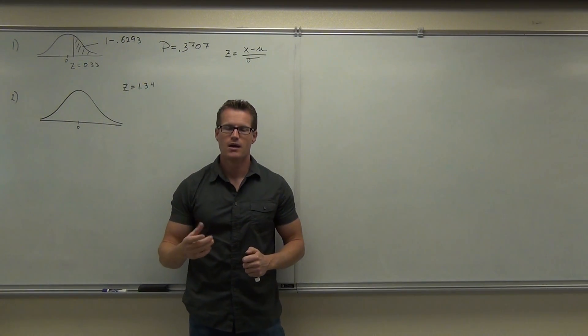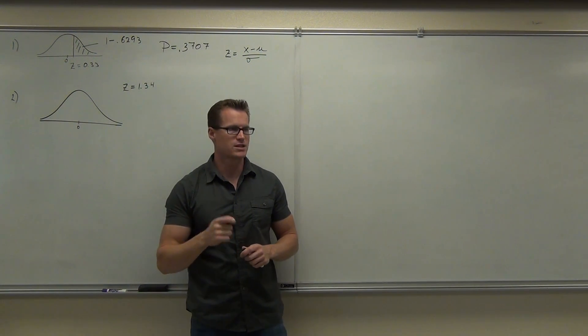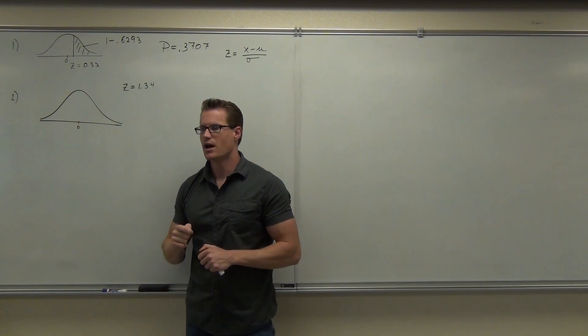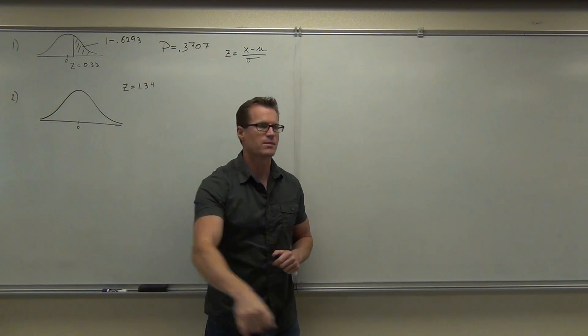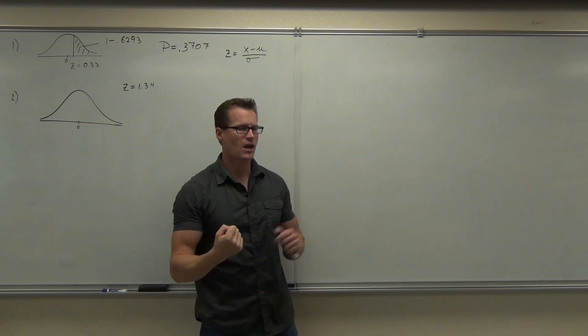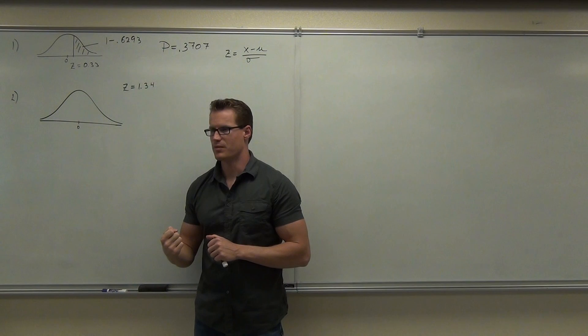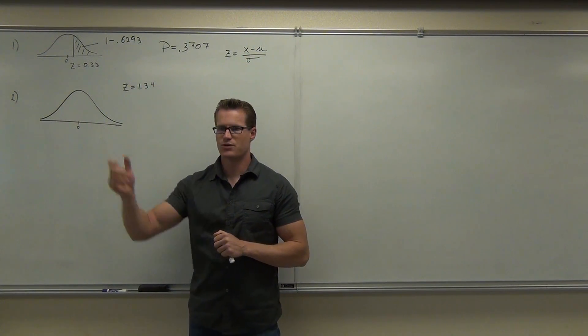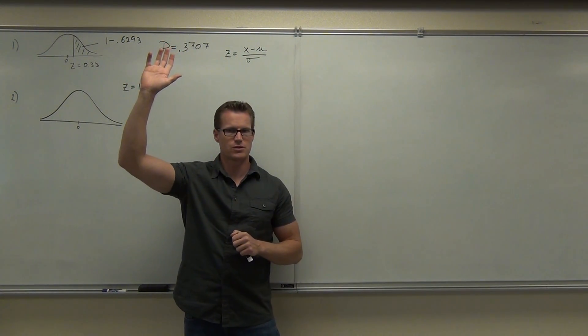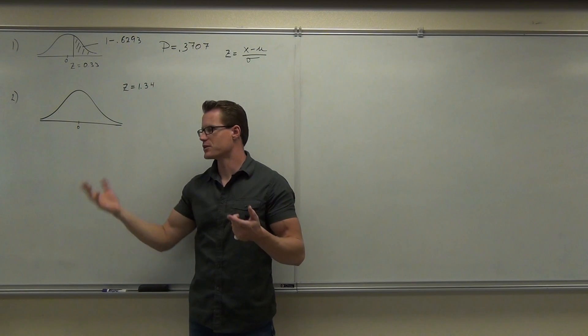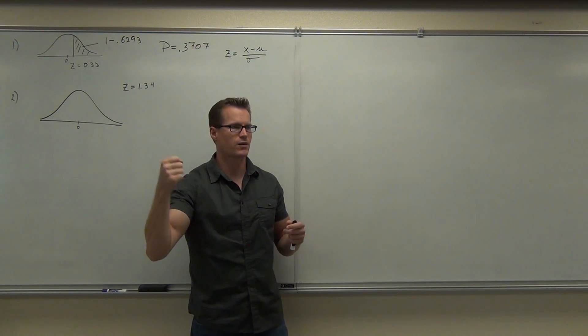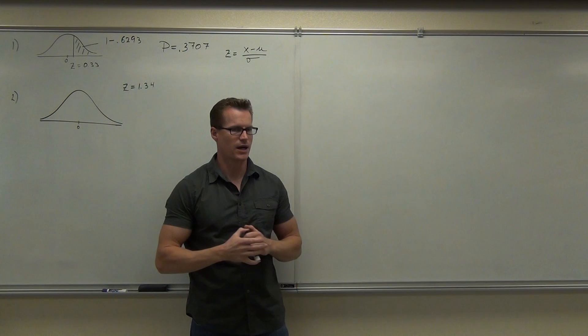We know in order to get the correct area, we're going to take one minus that value. That gave us a probability of 0.3707, or in other words, there's a 37.07% chance that you're going to go to this population, randomly select an individual, and they'll have a weight of more than 175 pounds. Raise your hand if you're okay with interpretation.